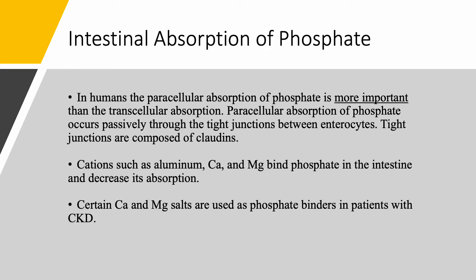In humans, paracellular — passive — absorption of phosphate is more important than transcellular absorption. This passive absorption occurs through the tight junctions between enterocytes, and these tight junctions are composed of claudins, as we discussed for calcium and magnesium. Cations such as aluminum, calcium, and magnesium bind phosphate — this is why they are used as phosphate binders in the intestines for patients with chronic kidney disease.